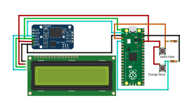In this circuit, you can see the 3 volt output pin of the Raspberry Pi Pico board is connected to the VCC pin of both the DS3231 RTC module and the 16x2 LCD. The GND or ground pin of both the 16x2 LCD and the DS3231 RTC module is connected to the GND or ground pin of the Raspberry Pi Pico board.